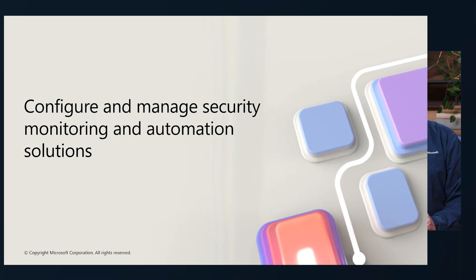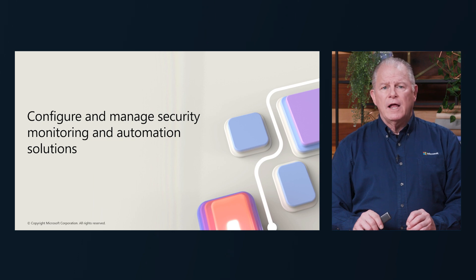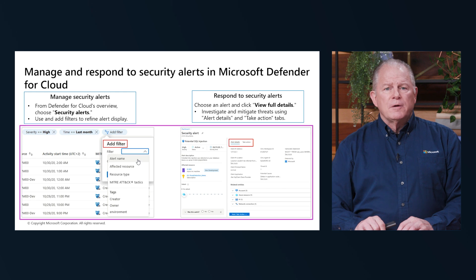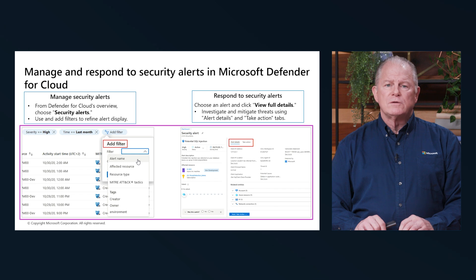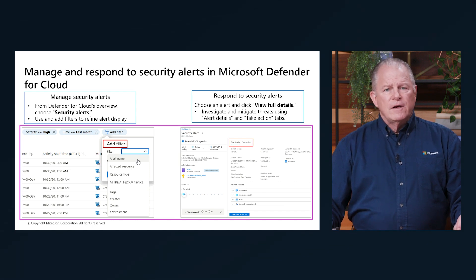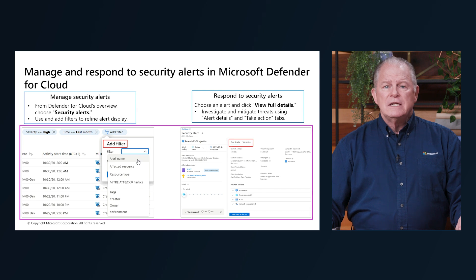Security alerts are notifications generated by Microsoft Defender for Cloud's workload protection plans when threats are identified in your Azure, hybrid, or multi-cloud environment. These alerts are triggered by advanced detections available when you enable Defender plans for specific resource types. Each alert provides details of affected resources, issues, and remediation steps. Defender for Cloud classifies alerts and prioritizes them by severity, helping you understand which alerts need immediate attention and which ones might be less critical.